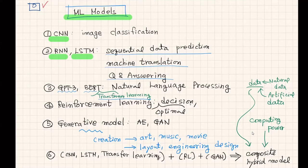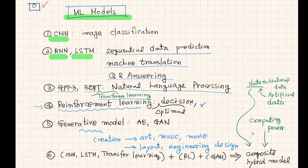GPT-3 and BERT have attention networks that help to understand the context of paragraphs and books, and they are useful for natural language processing. Also this month we're going to start talking about reinforcement learning, which is useful for optimal decision making — related to engineering or business tasks.